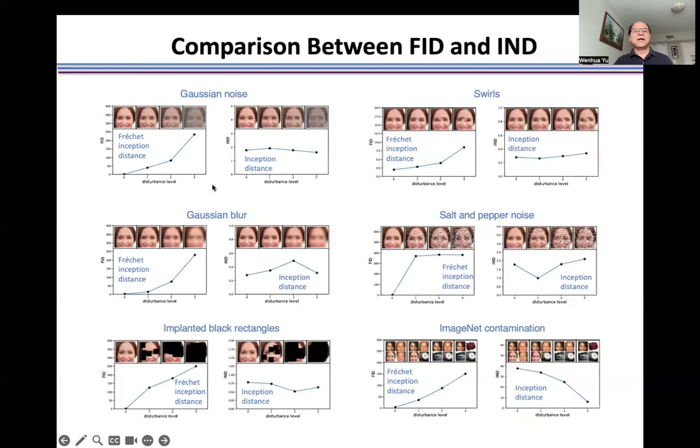The FID is consistent with increasing disturbances and human judgment. For example, we add Gaussian noise to image, the quality of image gets worse. So we measure the FID getting larger and larger, which is consistent with human judgment.